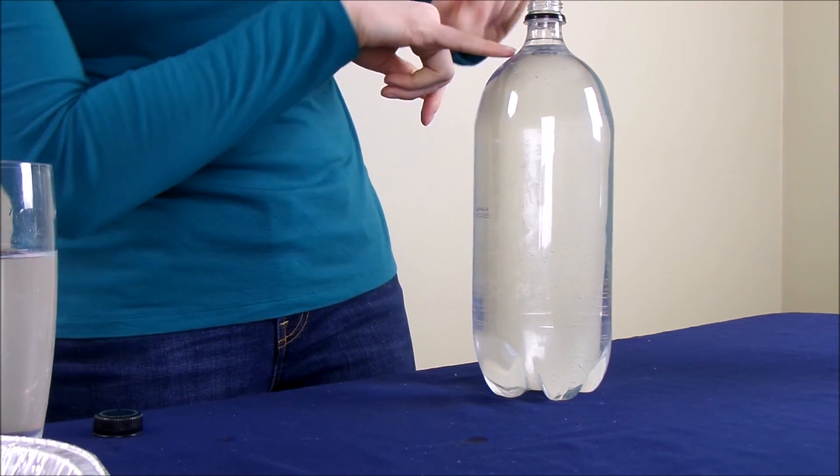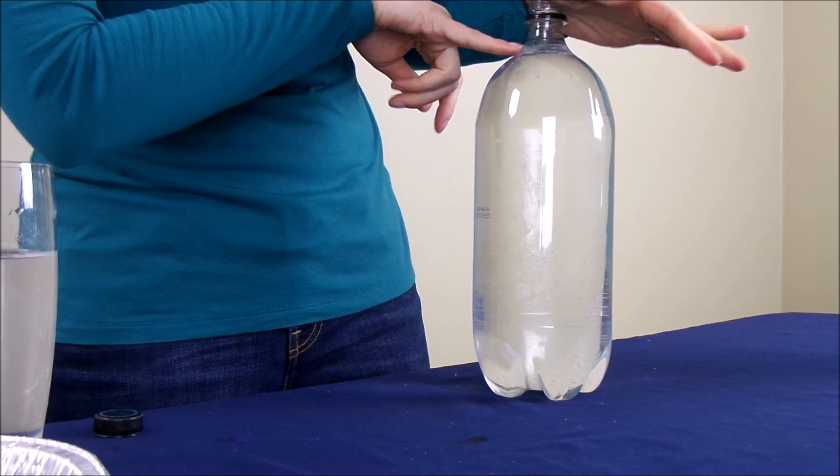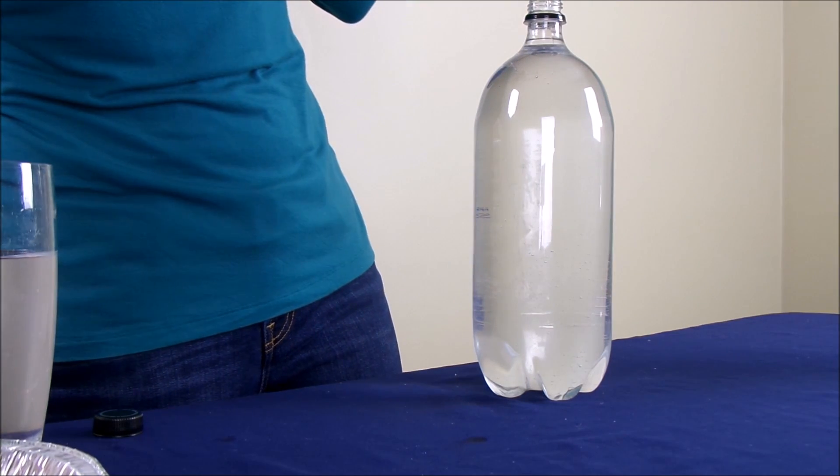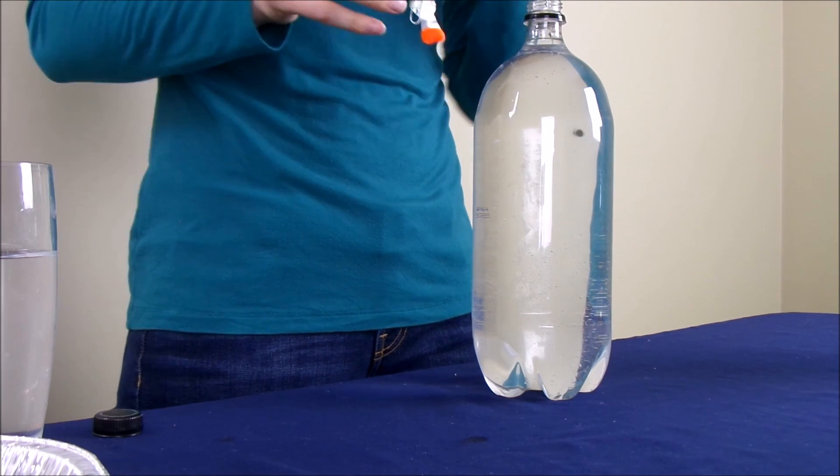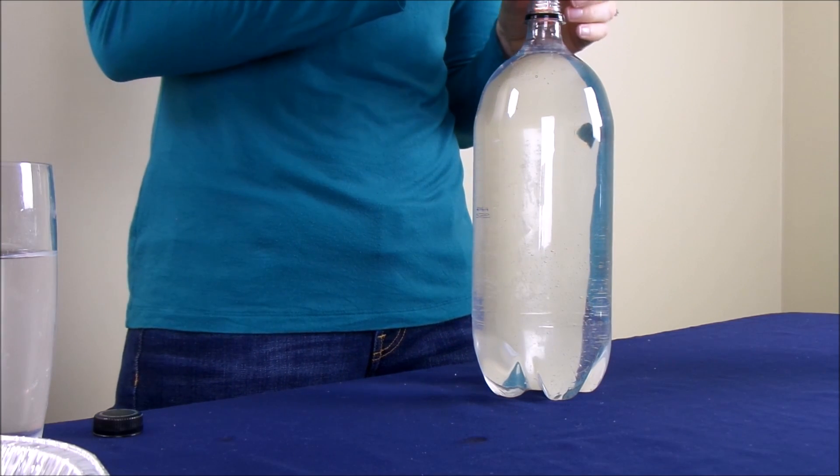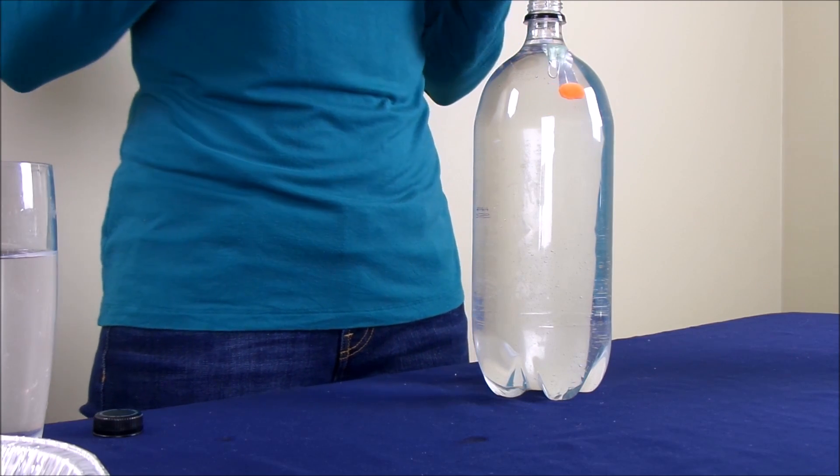It's important to keep the water really close to the top of the bottle. Now you can see that the water level is right here. Then I'm going to take my diver and put him feet first into the mouth of the bottle. You'll see that he floats.